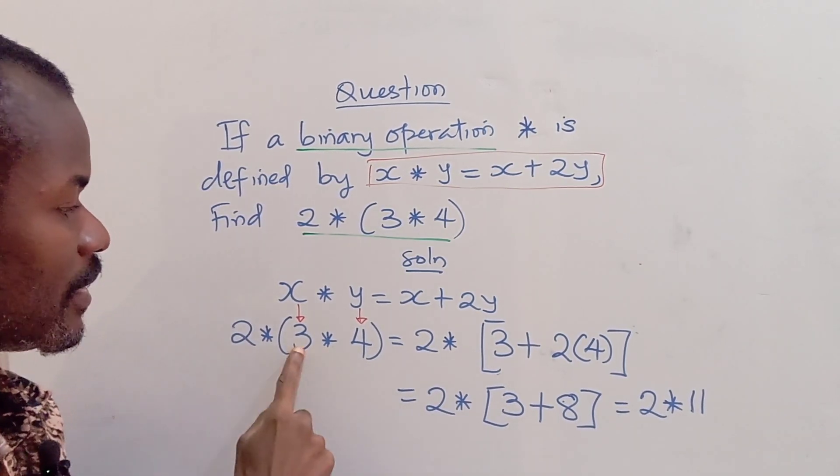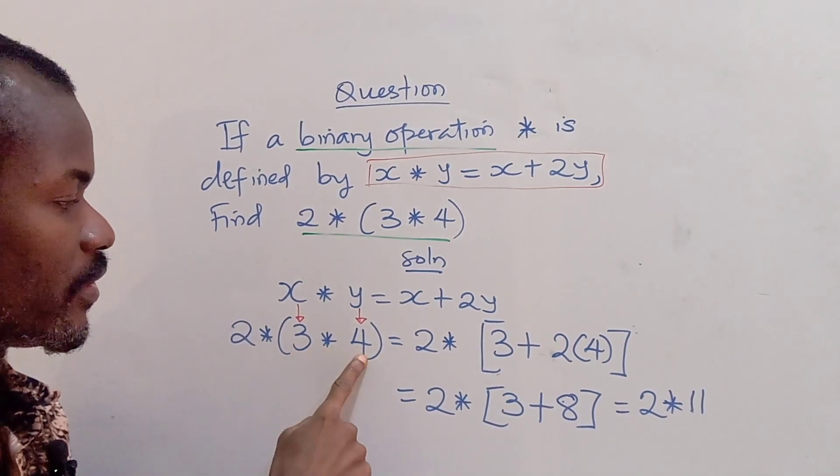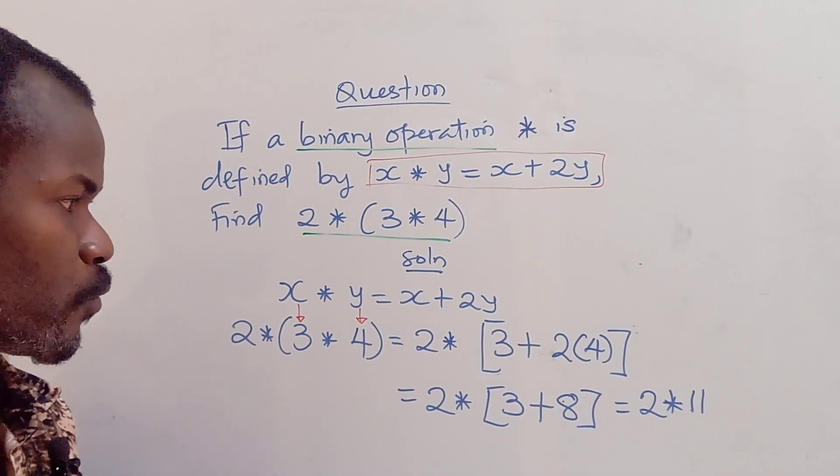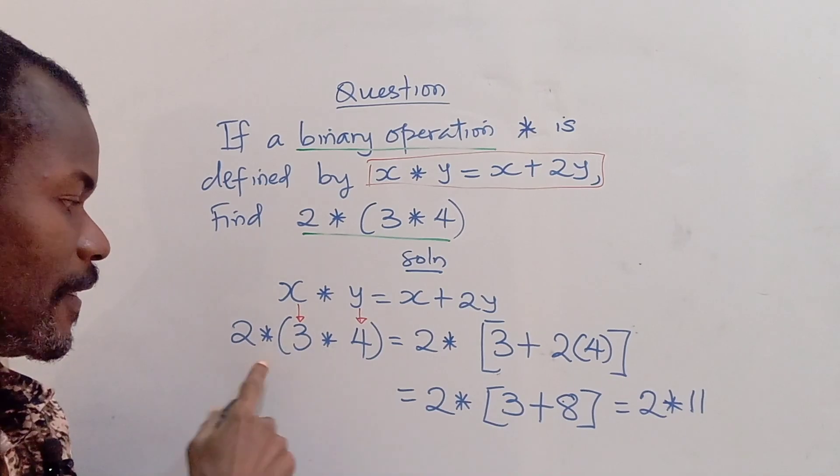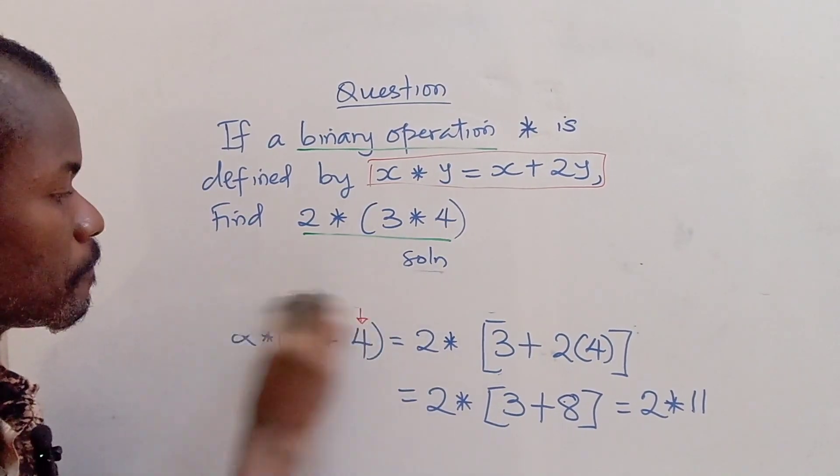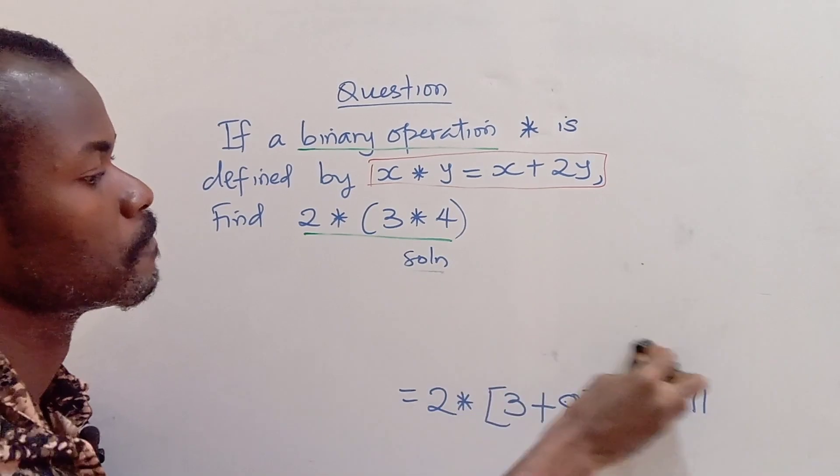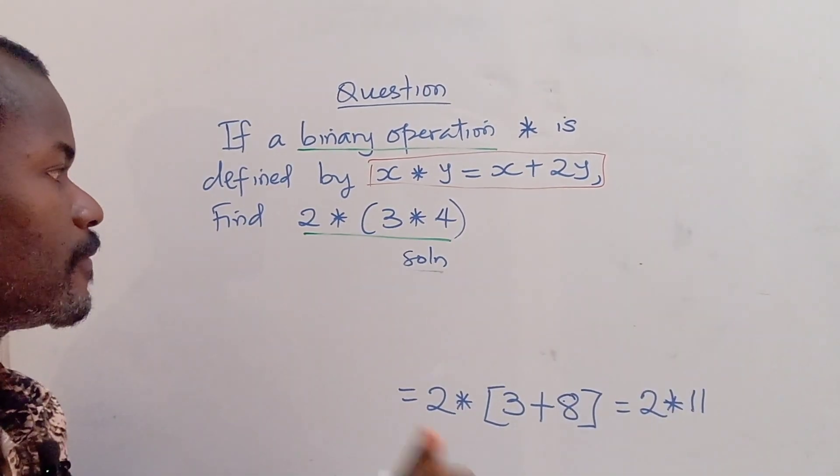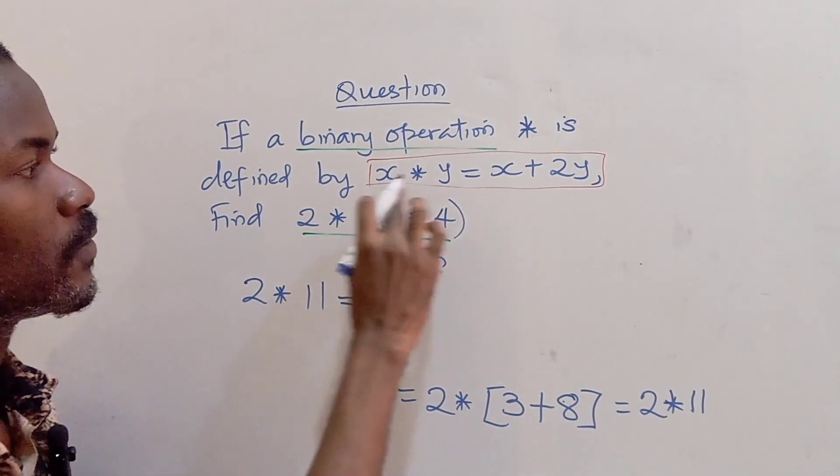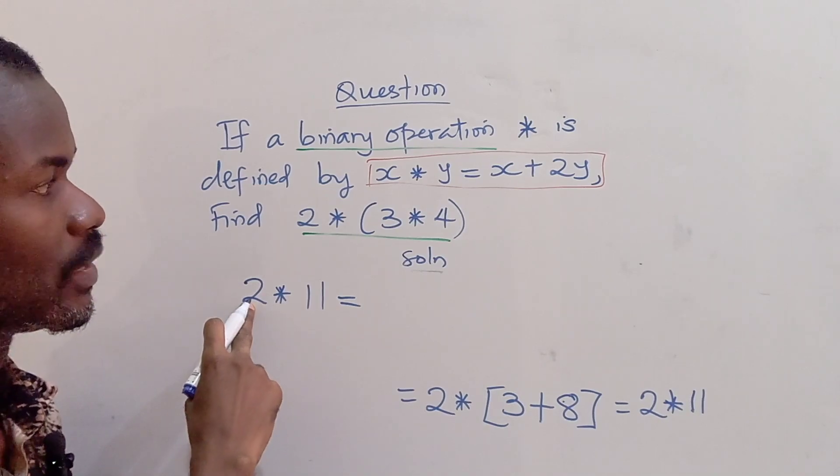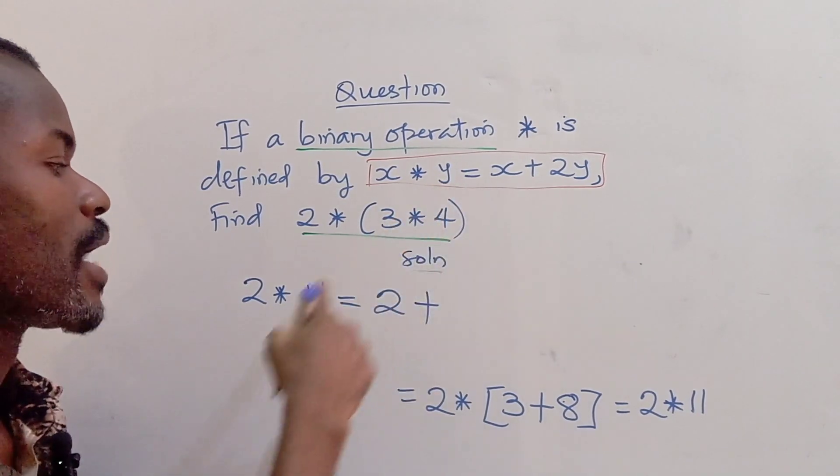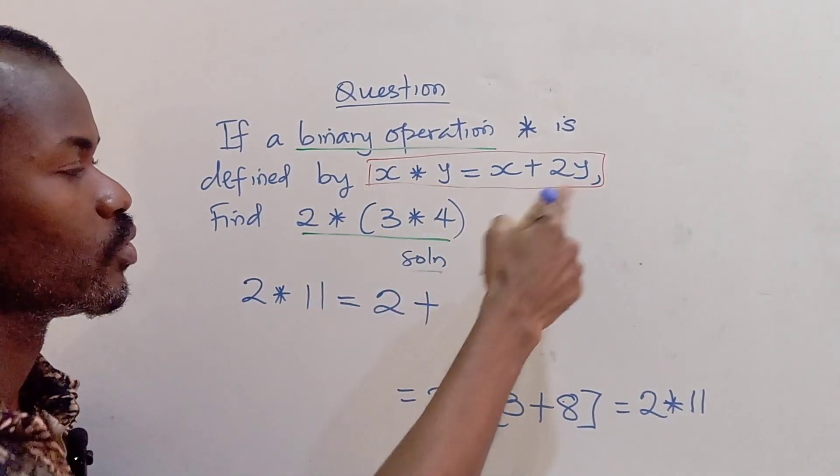Now we've been able to get 3 asterisk 4 as 11. So all we need to do is solve 2 asterisk 11 using the operation. So we have 2 asterisk 11. Using the operation, it means x is 2 and y is 11.